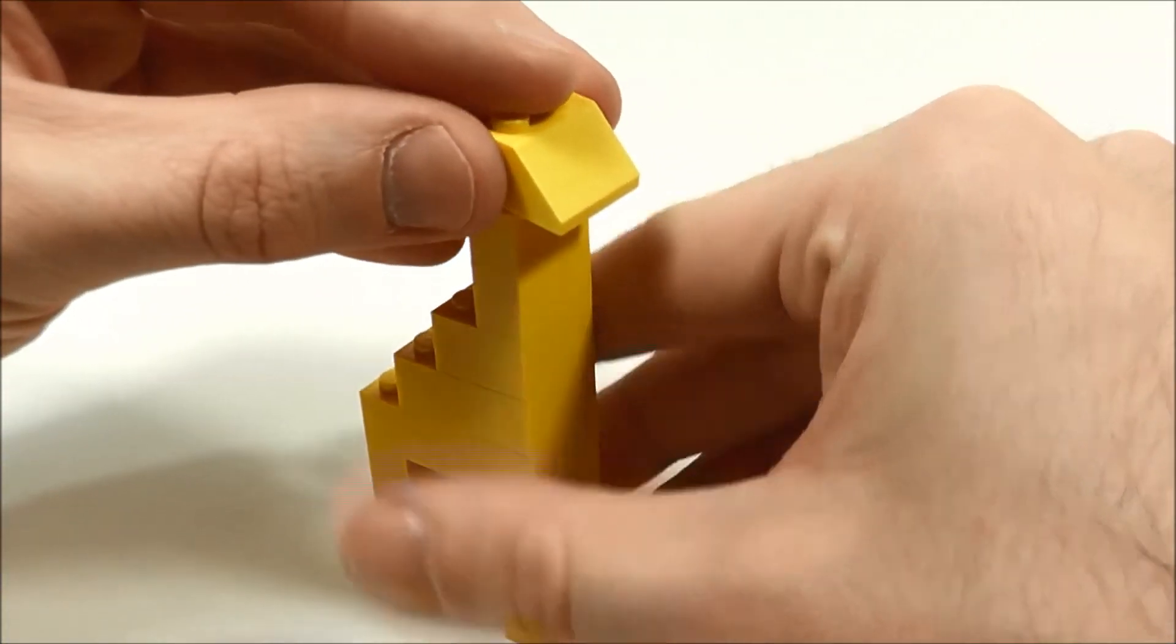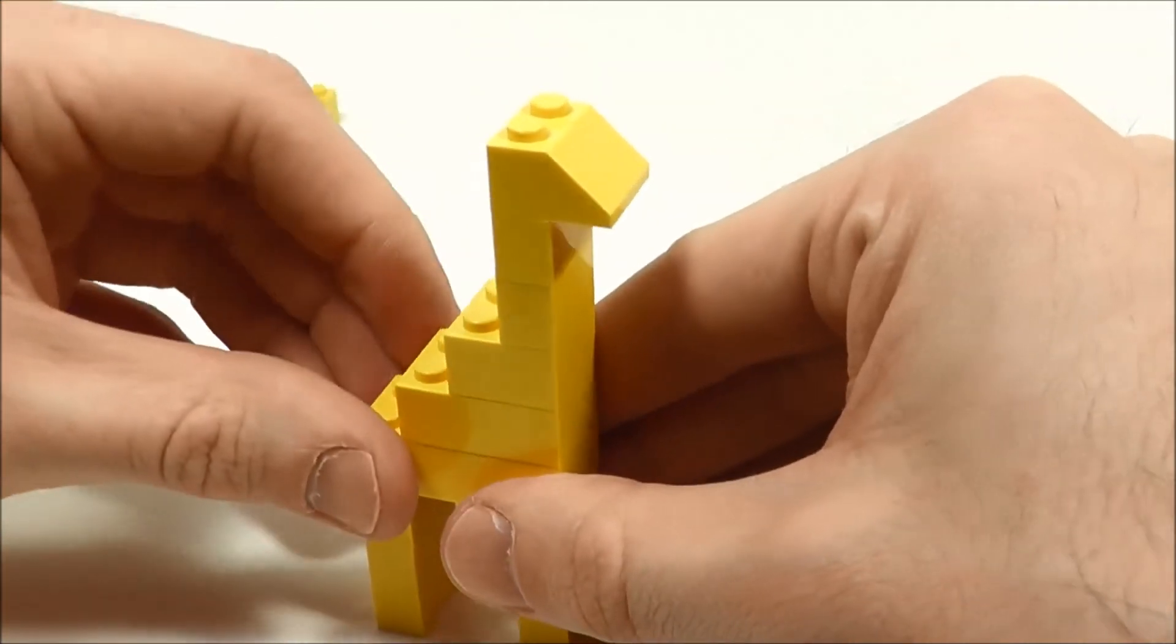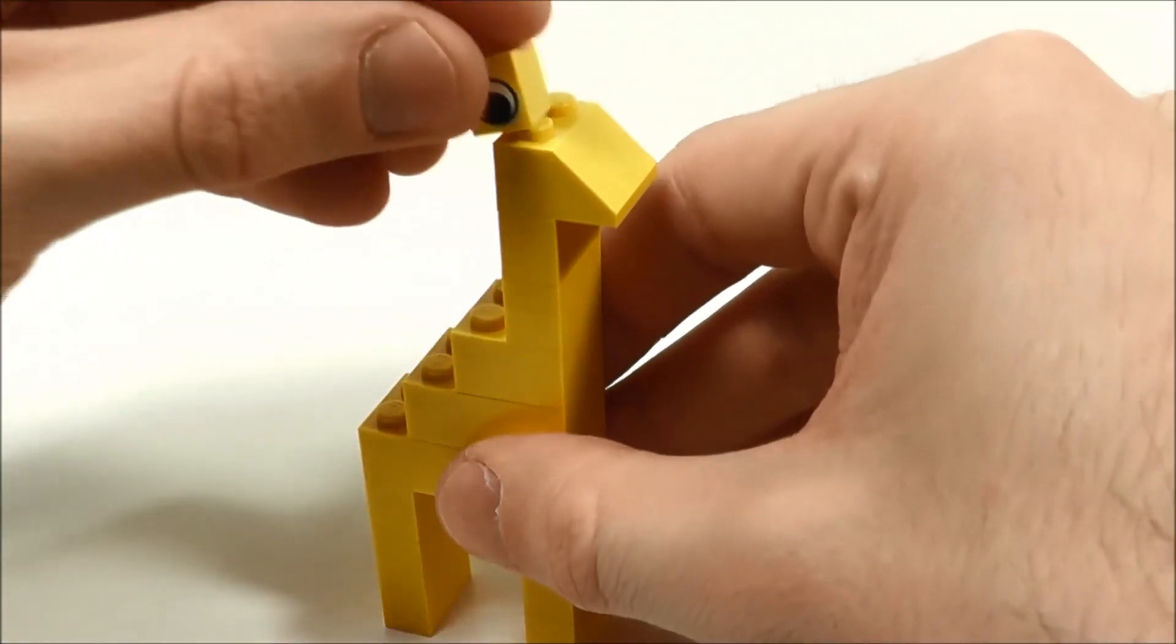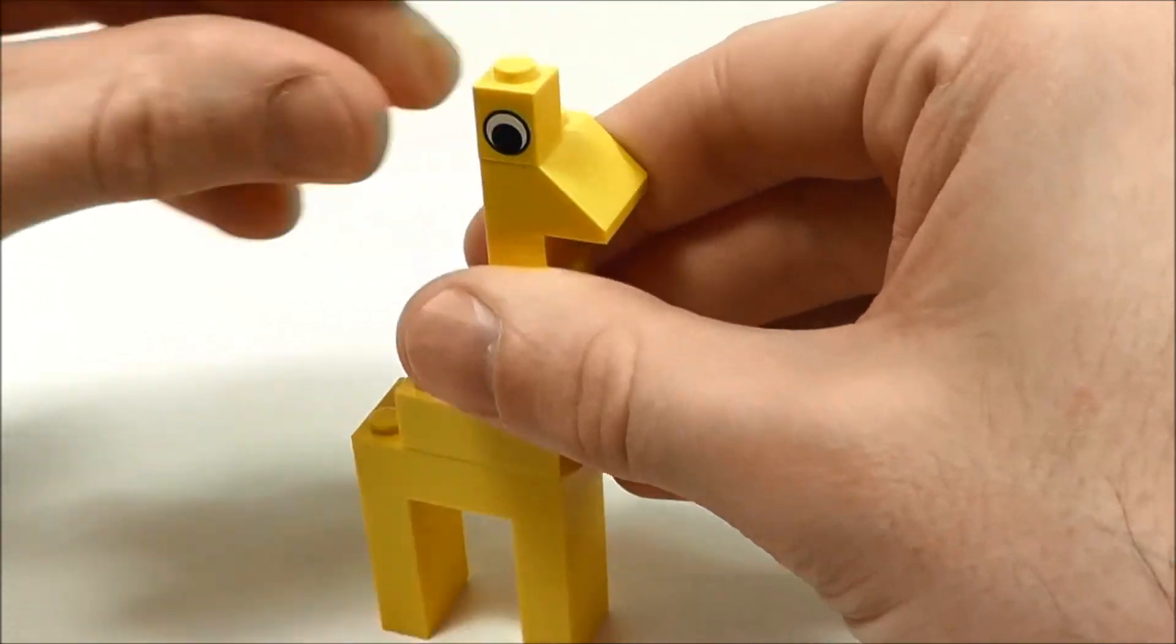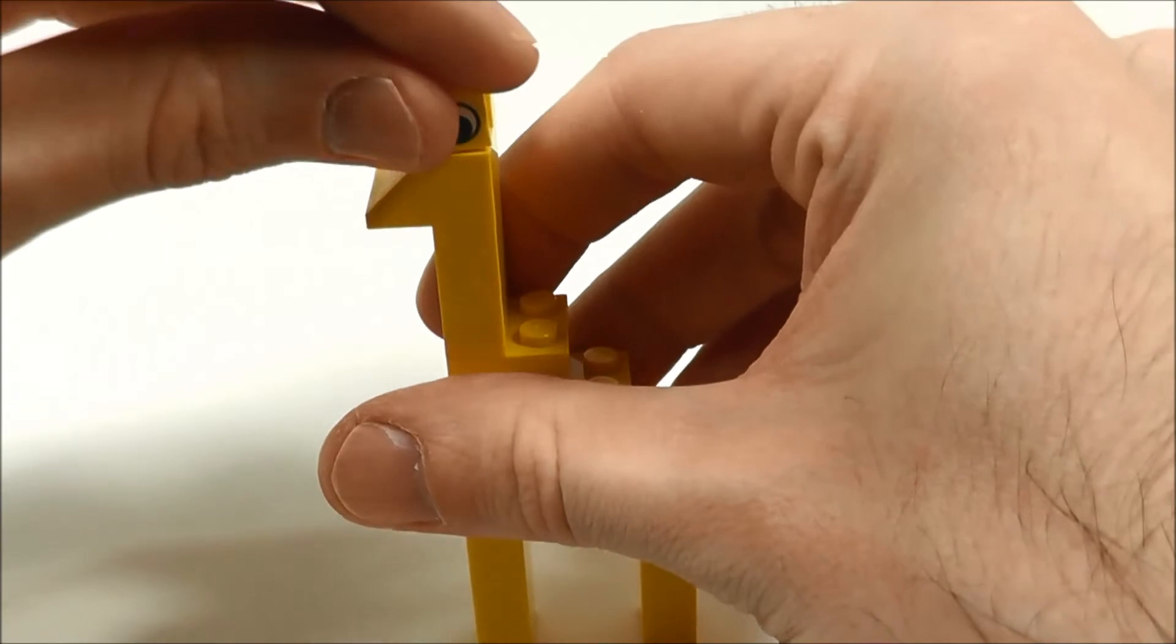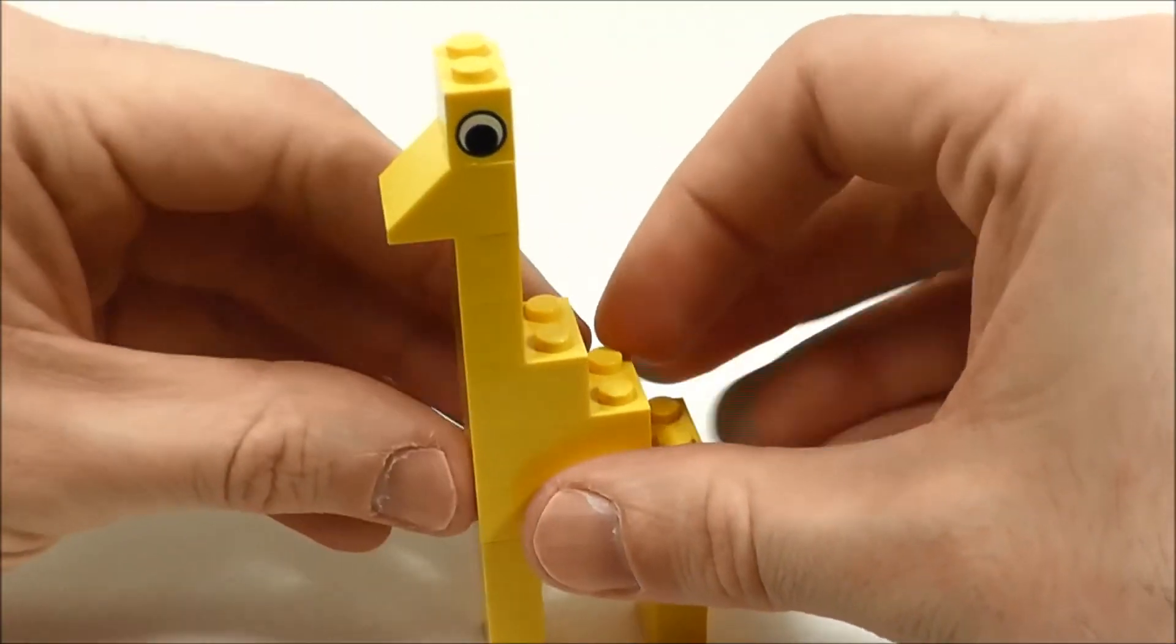Next, we'll work on the head. This is supposed to be the mouth of the giraffe, and it's just a slope. Very simple. And now these are where the eyepieces come into play, the ones that I mentioned. If you don't have them, you can make a substitution. So that's one on that side facing outwards, and then one on this side facing outwards as well.